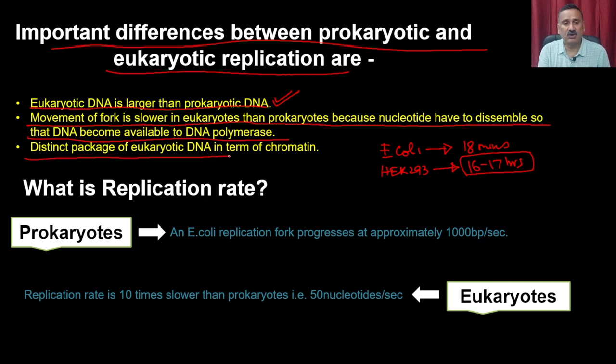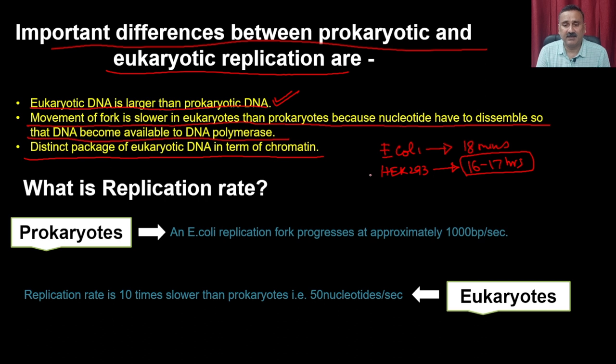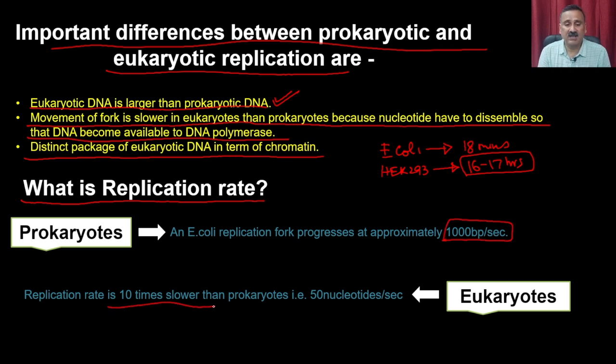Eukaryotes also have distinct packaging of DNA in terms of chromatin. Chromatin structure involves very high-order organization in eukaryotic systems, whereas this is absent in prokaryotes. The replication rate is slow because nucleosomes have to disassemble before DNA becomes available to DNA polymerase, and the chromatin structure must be freed before replication can proceed.